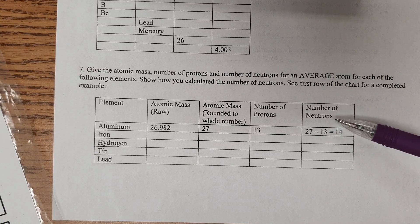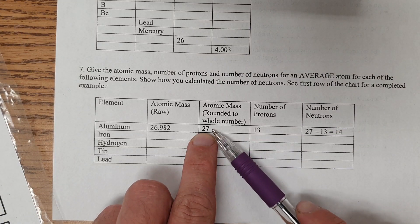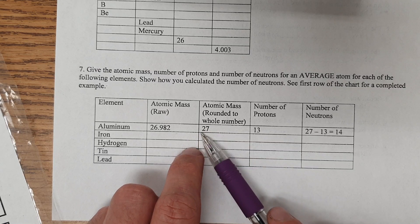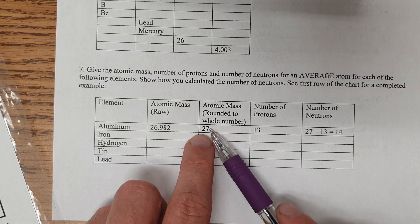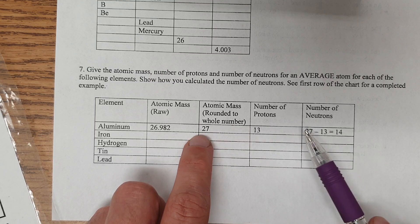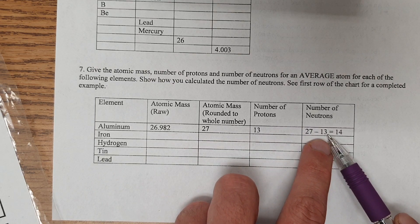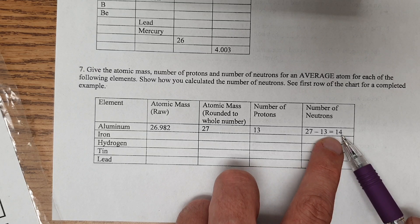And then neutrons, you take the atomic mass, subtract the number of protons, because this tells the number of protons plus neutrons. So this is just protons. So protons and neutrons minus the protons leaves just the neutrons. And that's 14 neutrons.